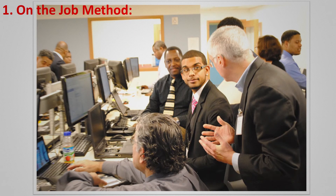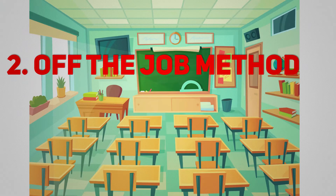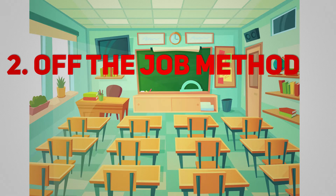On the job method means it's a form of training provided at a workplace while you are actually working. Off the job method is exactly opposite — this method of training is given away from the workplace. You are learning away from the actual workplace and will apply that knowledge later in your workplace.